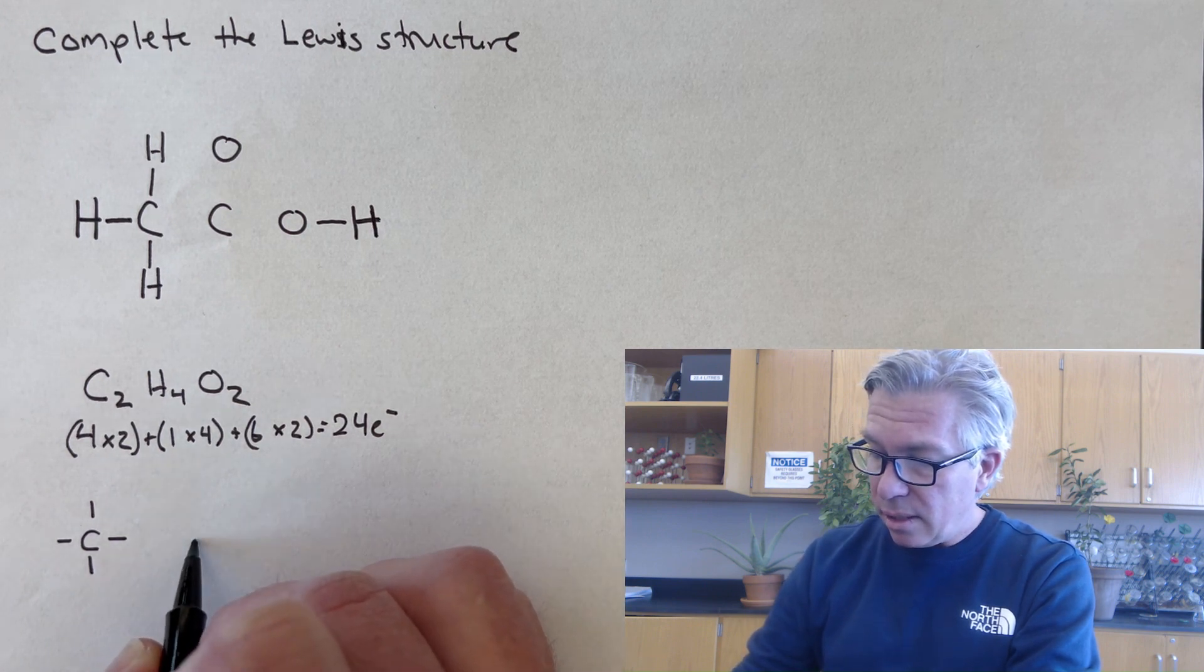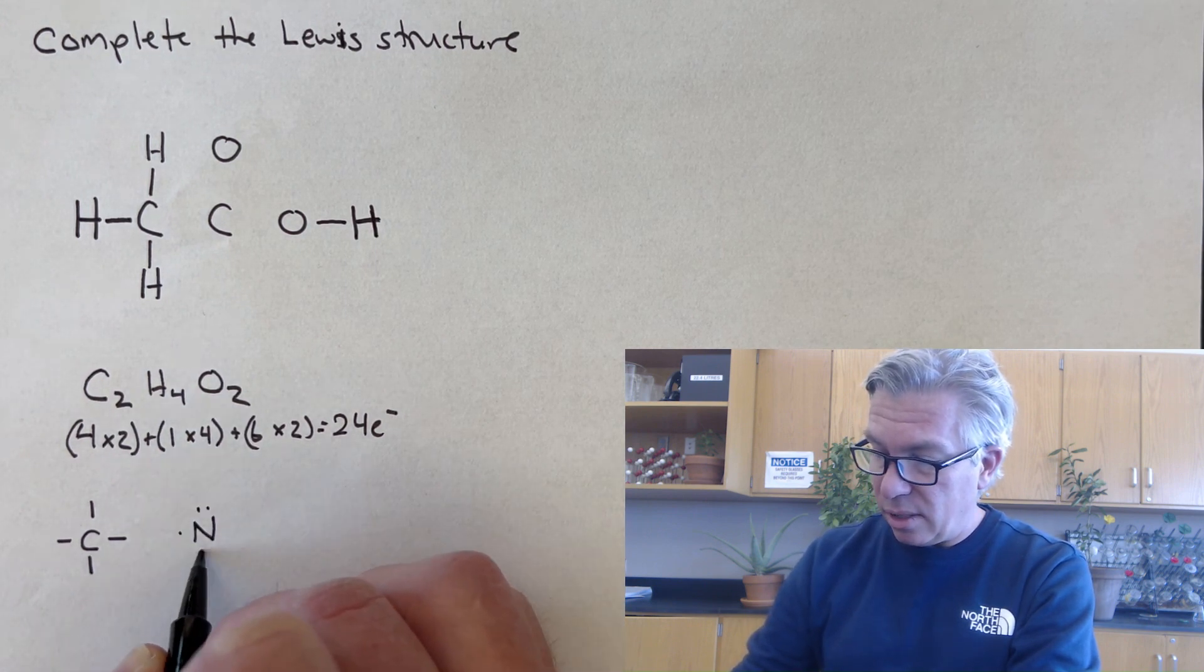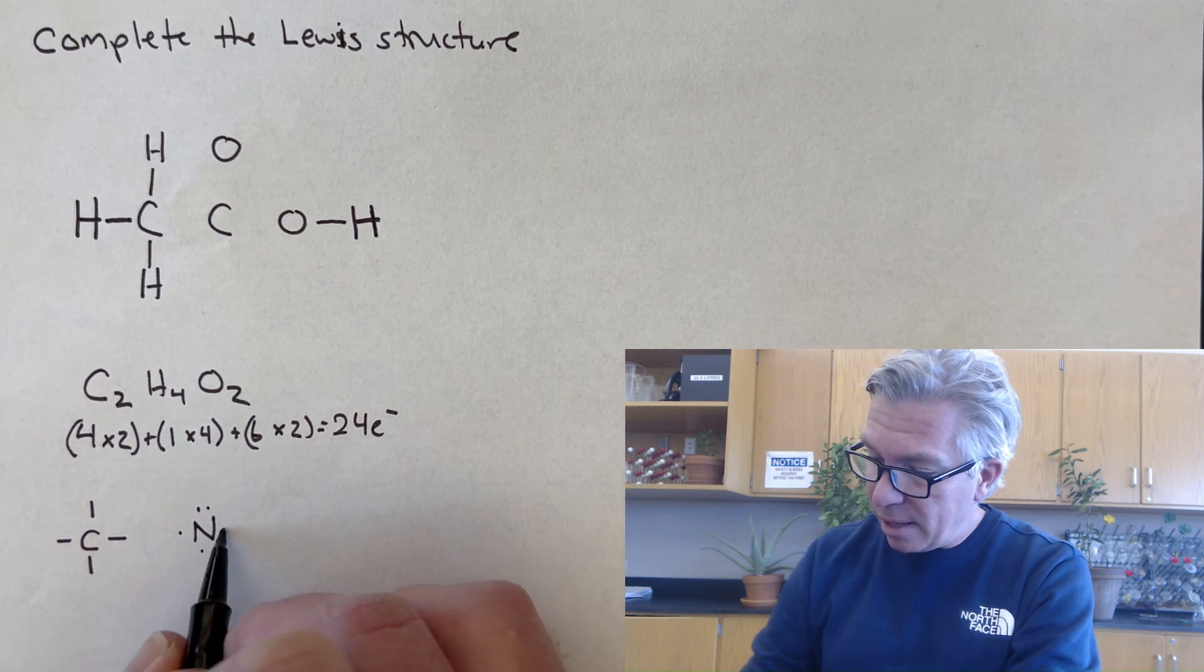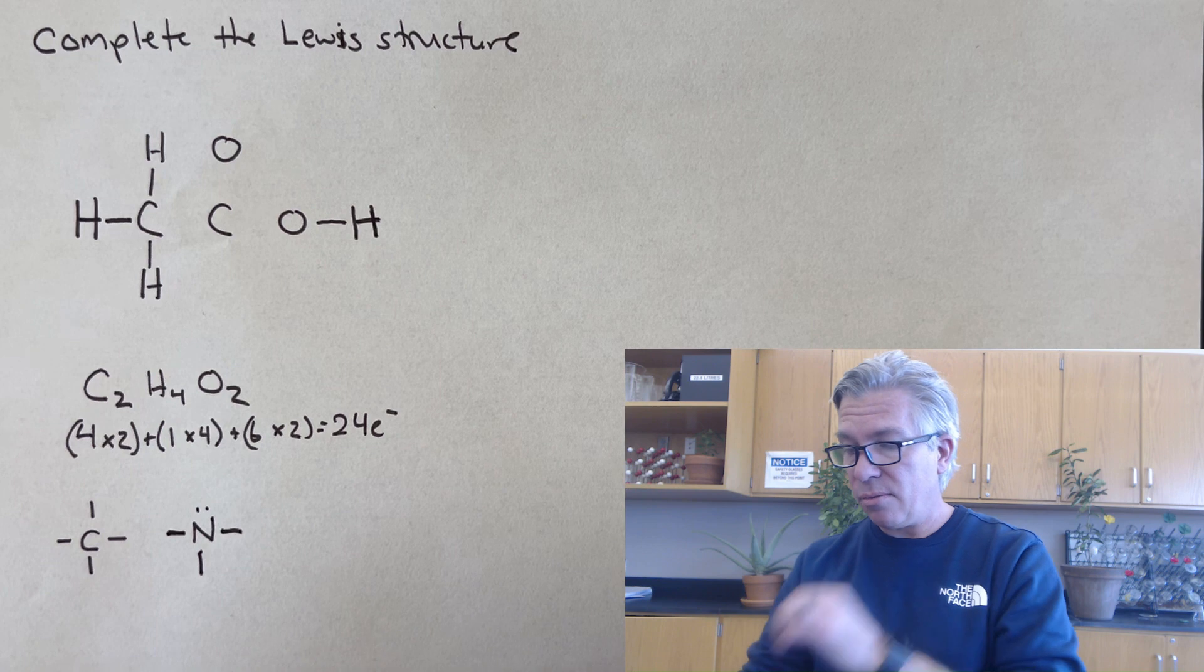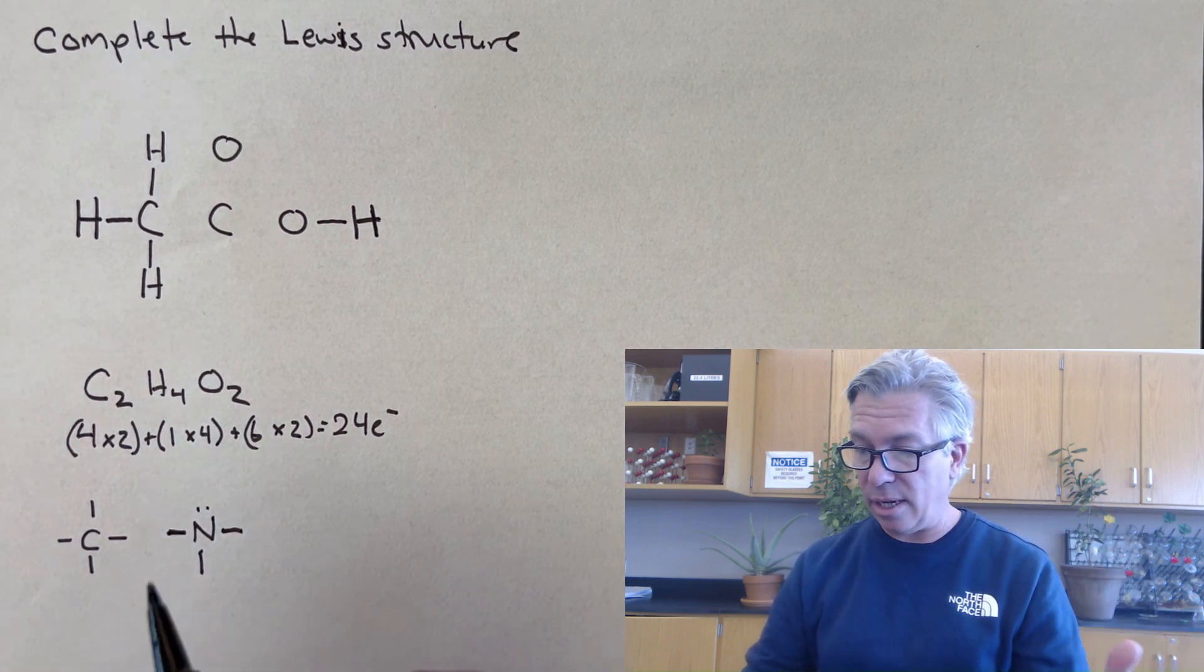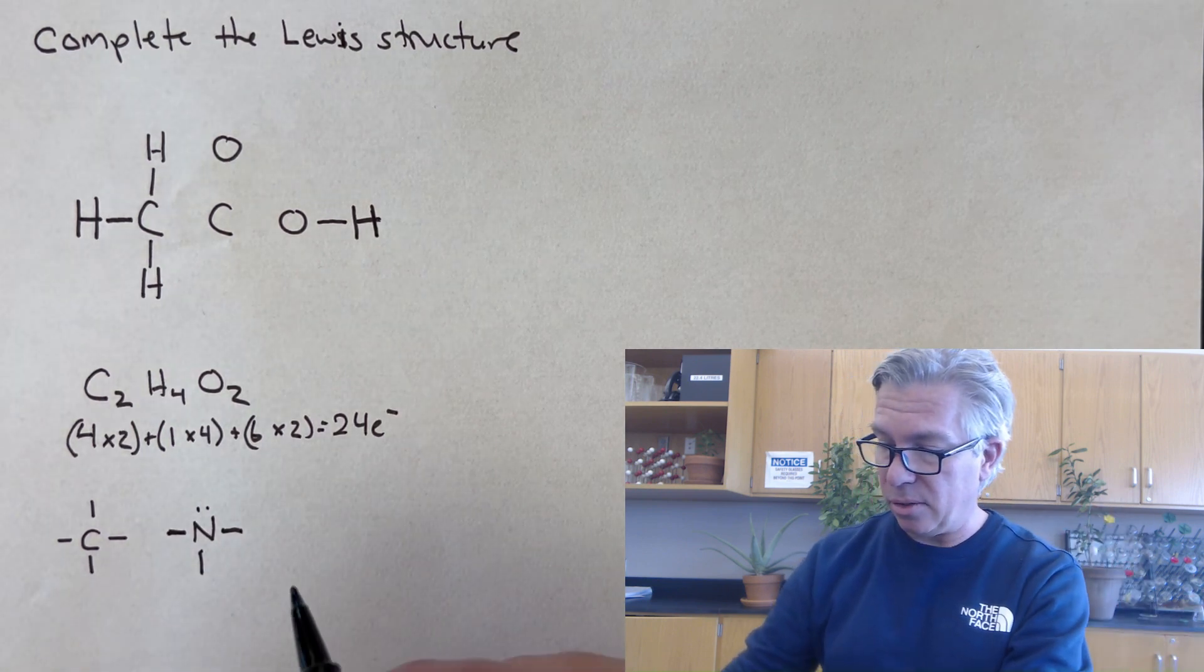Nitrogen starts with five valence electrons and will typically make three bonds. Not always, but typically three bonds, leaving a lone pair there. That's pretty typical. So you can kind of fit that piece into the puzzle somewhere as well.